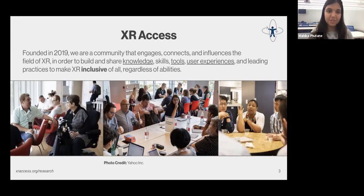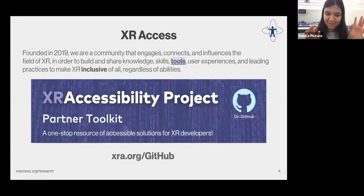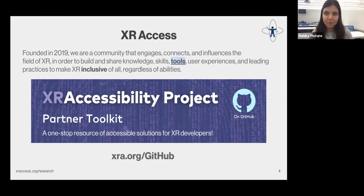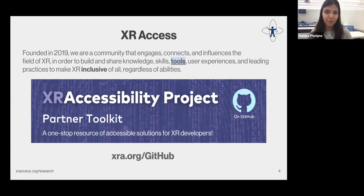Speaking of tools, one of the most recent tools being shared is the XR Accessibility GitHub toolkit. This is a project for developers to find code for ensuring accessibility on various platforms. It has resources like Professor Zhao's Seeing VR toolkit, which we'll hear more about today, but also many other projects and guidelines. You can access it at xra.org/GitHub with a capital G and capital H.